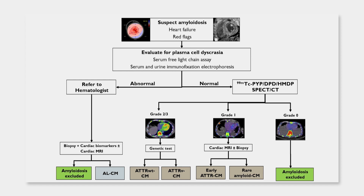Therapy of patients with transthyretin amyloidosis at an early stage is superior in terms of outcomes compared to therapy of patients with advanced disease. So if this is early disease that you have captured, these patients are likely to benefit from treatment. Once you do MRI plus or minus biopsy, you conclude it's early transthyretin cardiomyopathy, or you may learn that this is a rare amyloid cardiomyopathy.